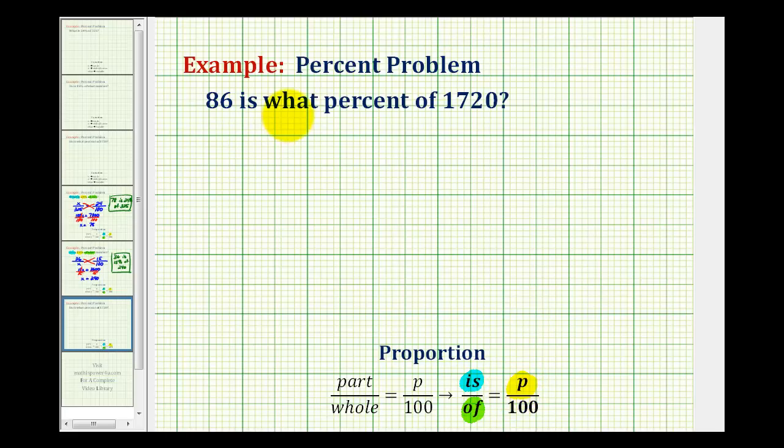We want to know 86 is what percent of 1720. And by reading this, we know we're actually going to be solving for the percentage, because it says what percent. So our unknown is going to be the p over 100.